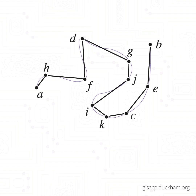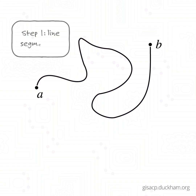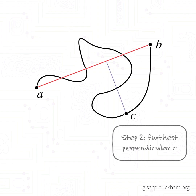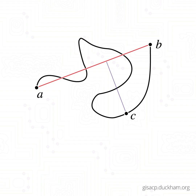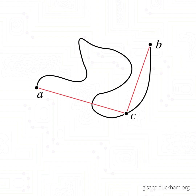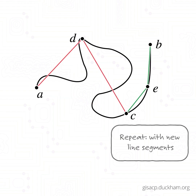The algorithm begins by constructing the straight line segment formed by the two endpoints of the arc to be simplified. Next, we search for that point on the arc with the greatest perpendicular distance to the line segment. This point is then used to split the line segment into two parts, and the procedure is applied recursively to each of the new parts.